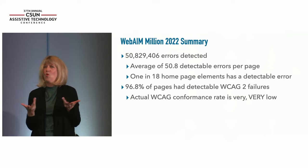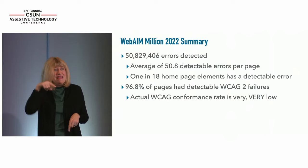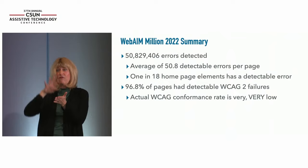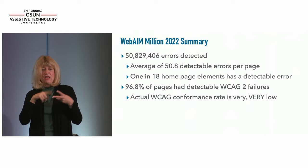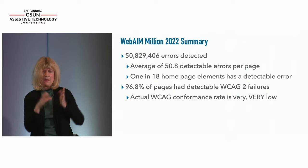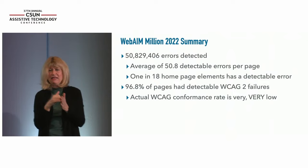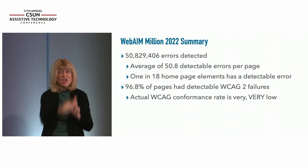This year we detected 50,829,406 errors across those one million homepages — an average of about 50.8 detectable errors per page. When we looked at the number of page elements, that means about 1 in every 18 homepage elements has a detectable error. A page element can be a paragraph, links, buttons, a section of bold text, things like that. So consider that somebody with a disability, on average, could encounter a barrier at about 1 in every 18 elements on an average homepage.